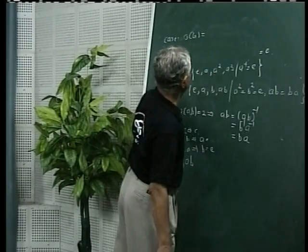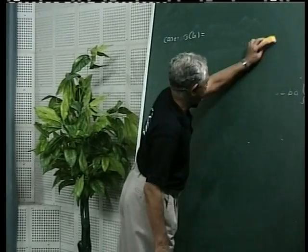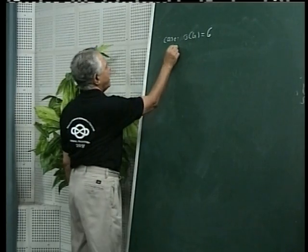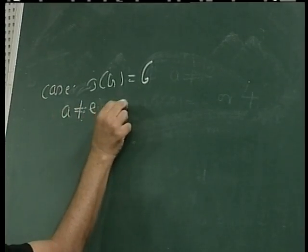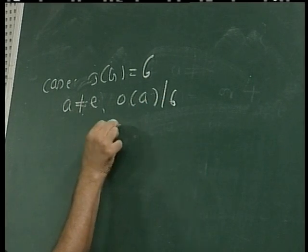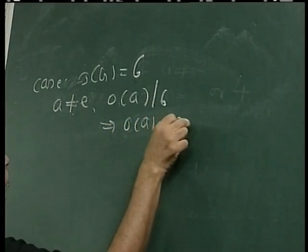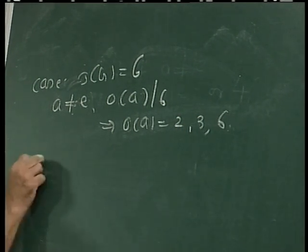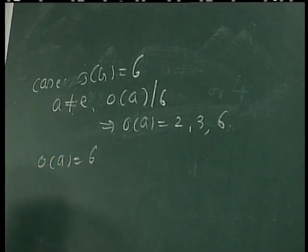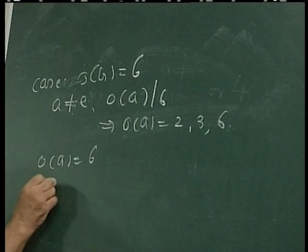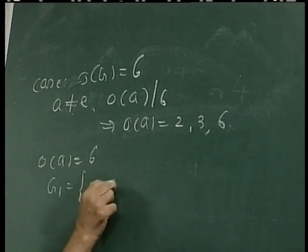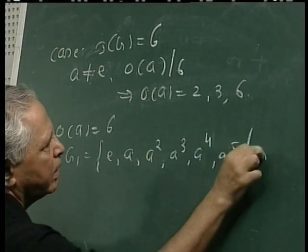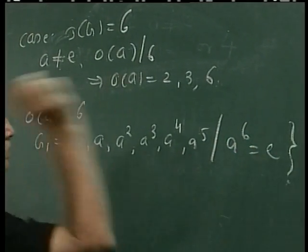Now we take the second case where order of the group G is 6. Here we take any element a different from e, then order of a divides 6, and that implies order of a equals 2, 3, or 6. The first case, order of a equals 6: our group G1 becomes {e, a, a-squared, a-cubed, a-raised-to-4, a-raised-to-5} and a-raised-to-6 equals e.